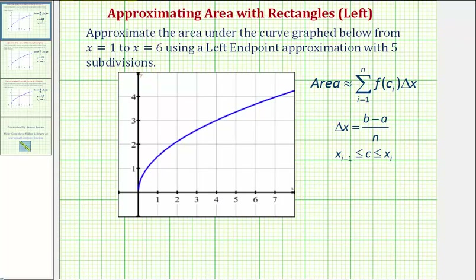To approximate this area, we'll be determining a Riemann sum where the area is approximately equal to the sum of f of c sub i times delta x, where f of c sub i would be the height of the rectangle and delta x would be the width.